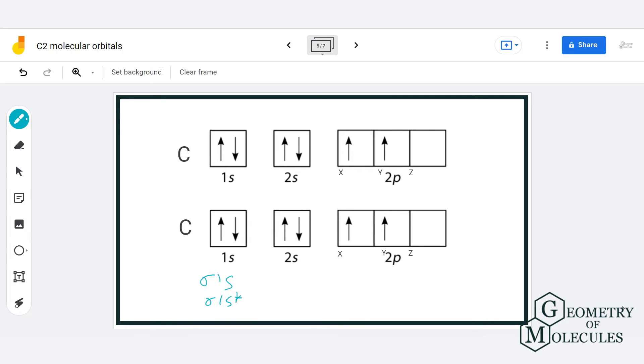1s will combine and form sigma 1s and sigma 1s star. 2s will combine and form sigma 2s and sigma 2s star. 2px will combine and form sigma 2px and sigma 2px star. Similarly, pi 2py and pi 2py star and pi 2pz and pi 2pz star will be formed.